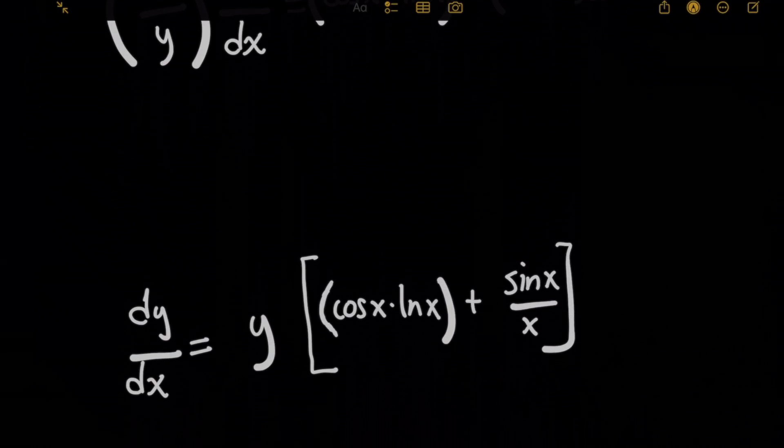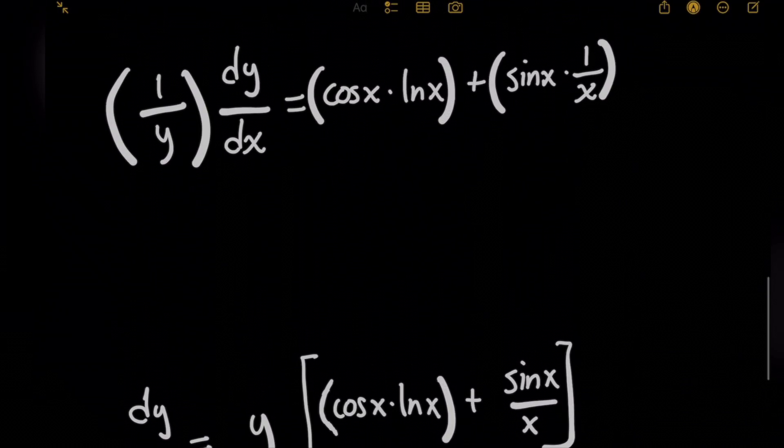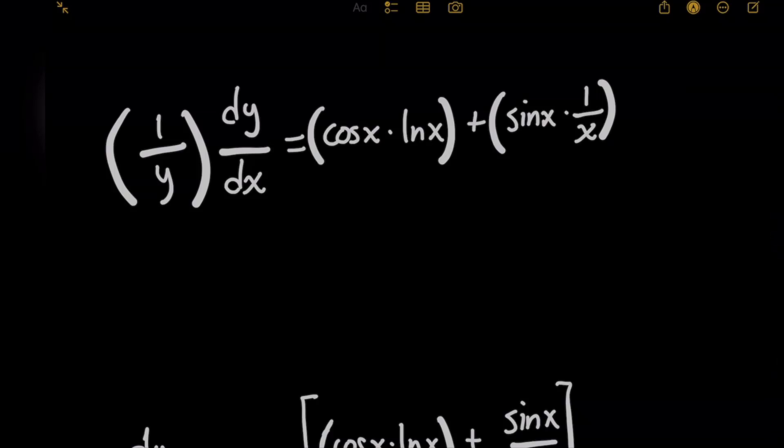So moving on, what I want to do now is because I have dy over dx on the left, but there is this 1 over y in front, we really want to get dy over dx isolated on that side of the equation, right?